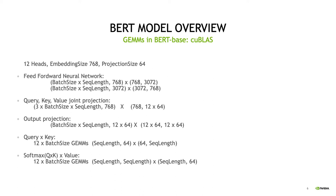Focusing on the matrix multiplications: in the feed-forward neural network we have two big GEMMs, then for projecting query, key, and value we have a joint projection where we do everything together, and therefore we have also a big GEMM. We have a medium-sized GEMM for the output projection after the attention mechanism, and then we have a bunch of small GEMMs for multiplying query and key, and the output of softmax with value.